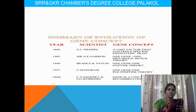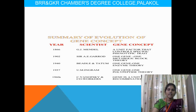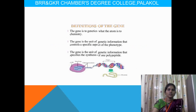Here we have a summary of the evolution of gene concepts — how scientists gave different proposals for the gene in different years. In 1866, Mendel proposed that a unit factor controls genotypic or phenotypic expressions. In 1902, Garrett proposed the one gene one metabolite theory. In 1940, Beadle and Tatum said one gene one enzyme. In 1957, Ingram proposed one gene one polypeptide theory. In 1960, Yanofsky and co-workers said the gene is a unit of recombination.